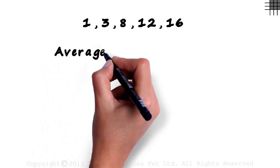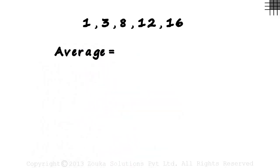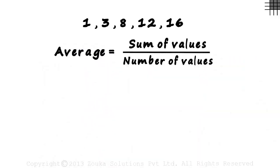There is a very simple way in which the average can be calculated. It can be calculated as sum of values divided by the number of values. That's how simple it is to find the average.